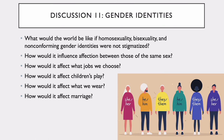Rather than dwelling on the negative outcomes of compulsory heteronormativity, for your discussion this week I want you to consider the following questions, looking at gender identities more widely: What would the world be like if homosexuality, bisexuality, and non-conforming gender identities were not stigmatized? How would it influence affection between those of the same sex? How would it affect what jobs we choose, how children play, what we wear, or even marriage itself? I look forward to reading your responses.